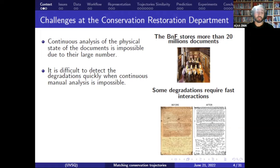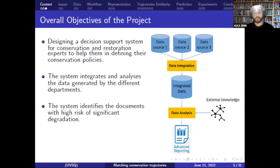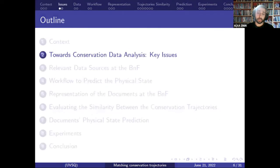This continuous checking is impossible to do manually due to the large number of documents. Therefore, it's difficult to detect degradations and interact quickly, which leads to more degradations. The overall objective of the project is to design a decision support system for conservation experts. The system should integrate heterogeneous data from BNF departments and analyze the conservation history of documents to enable predictions on their physical state, identifying documents likely to experience significant degradation and giving alerts for experts.